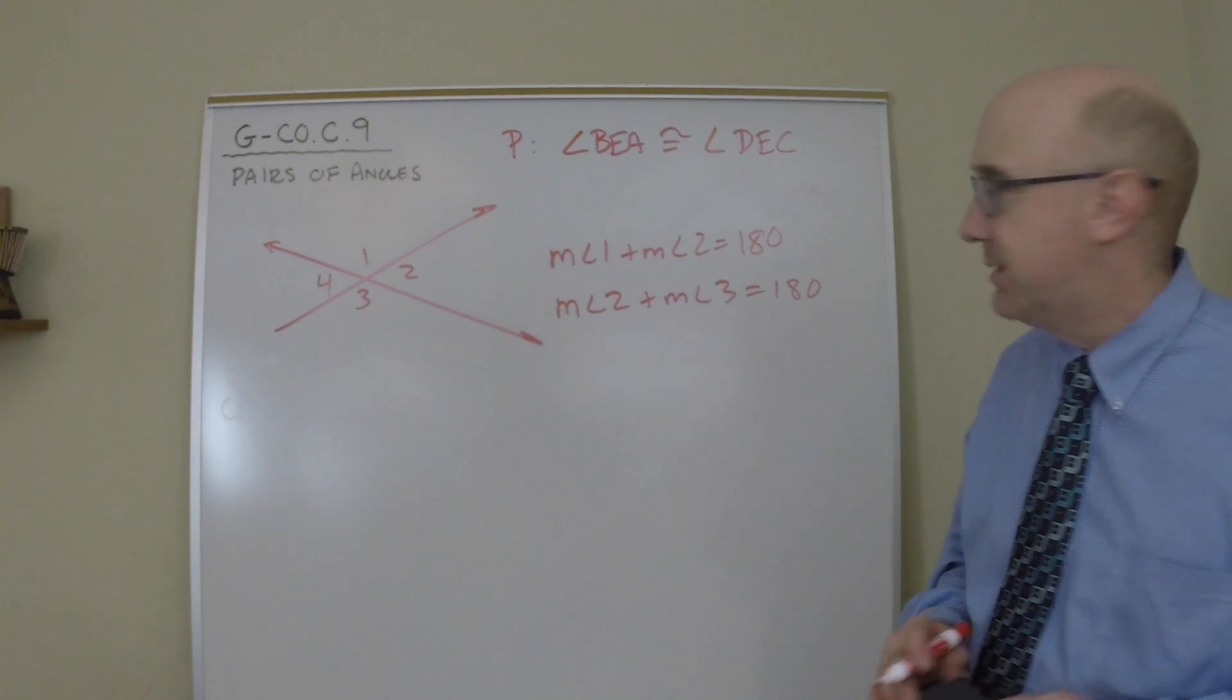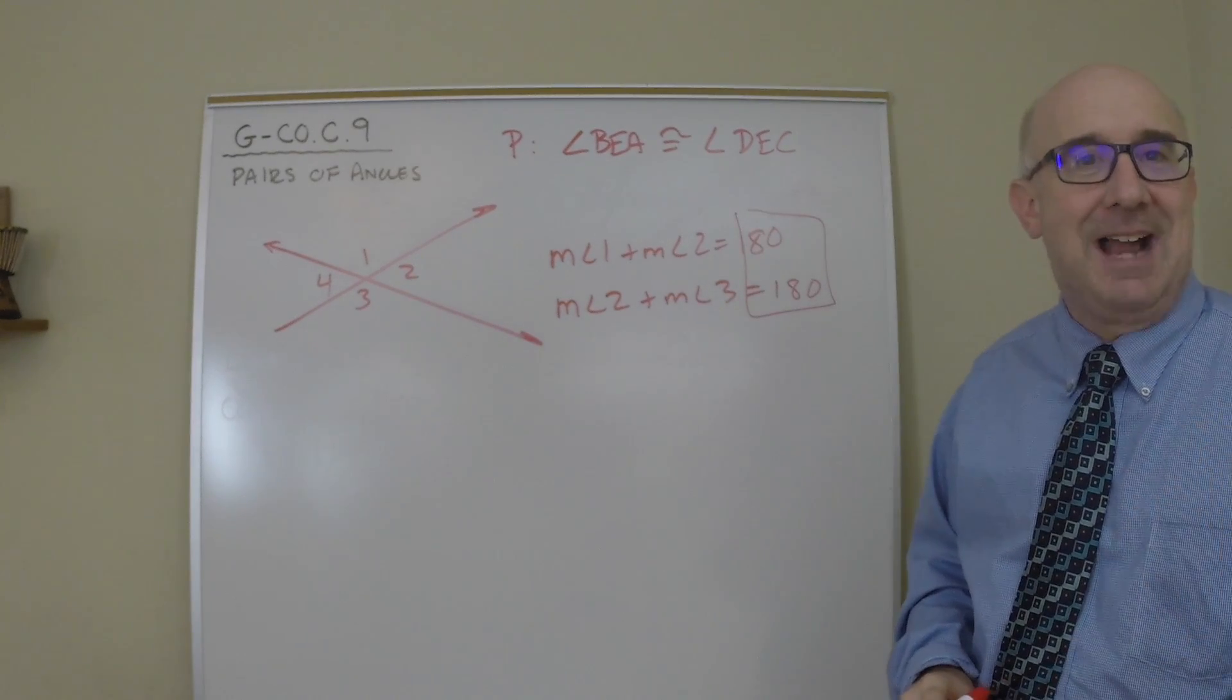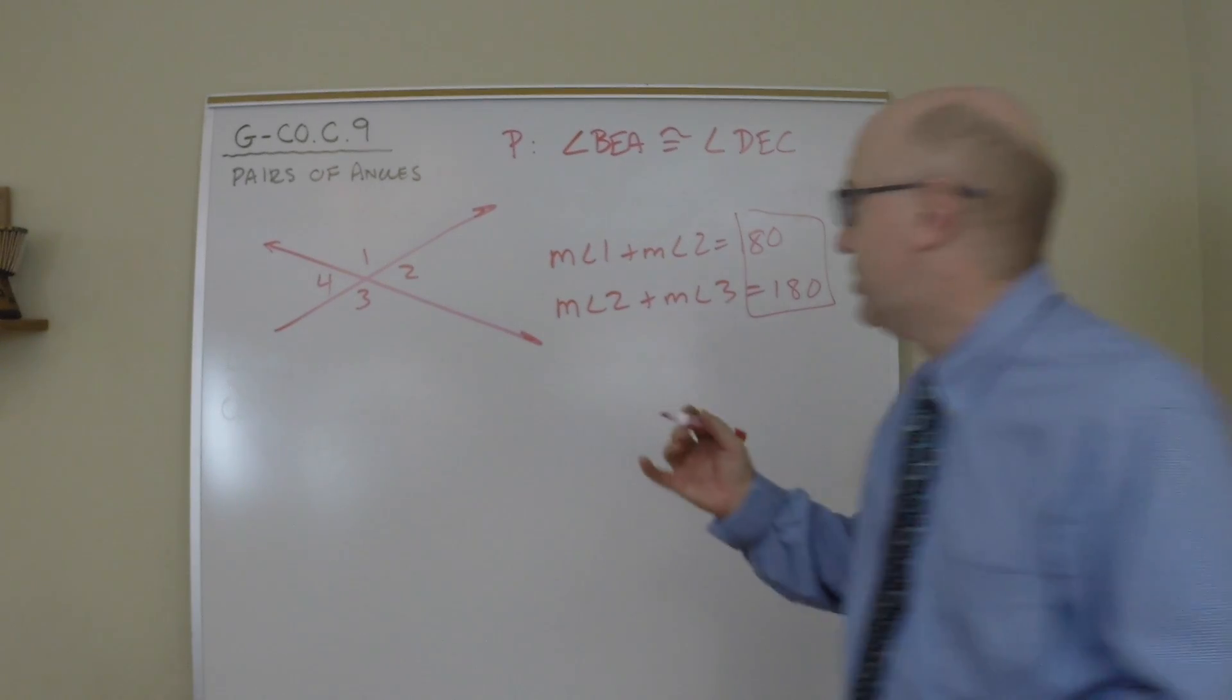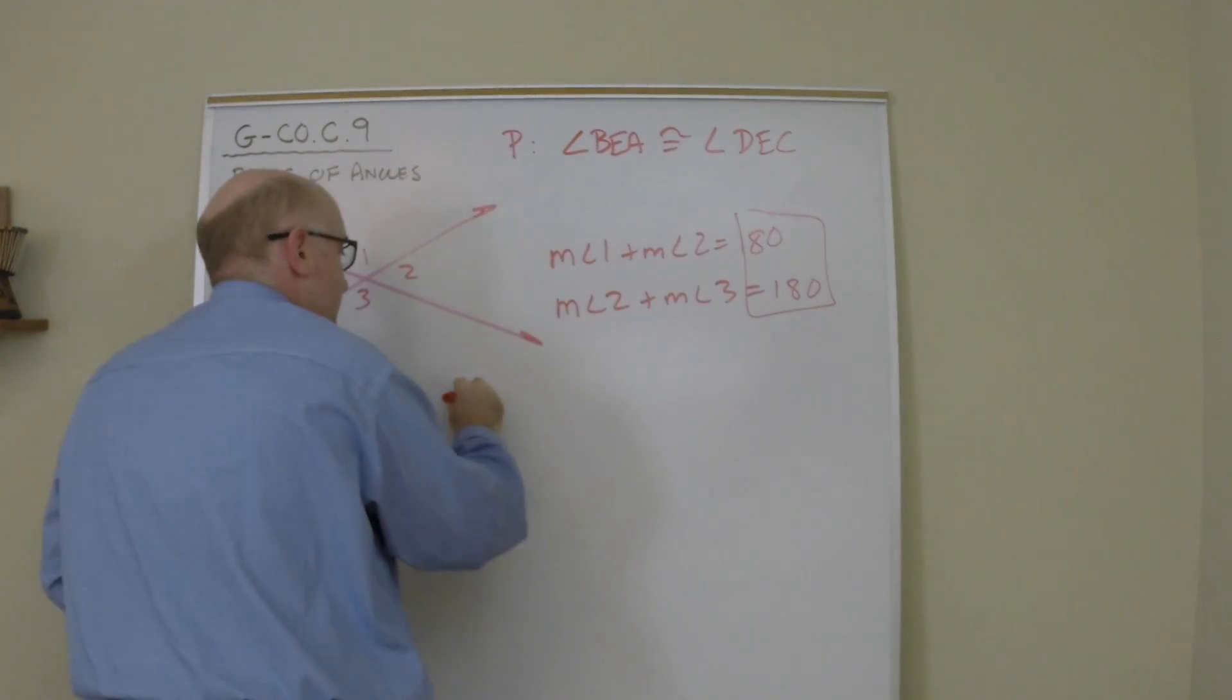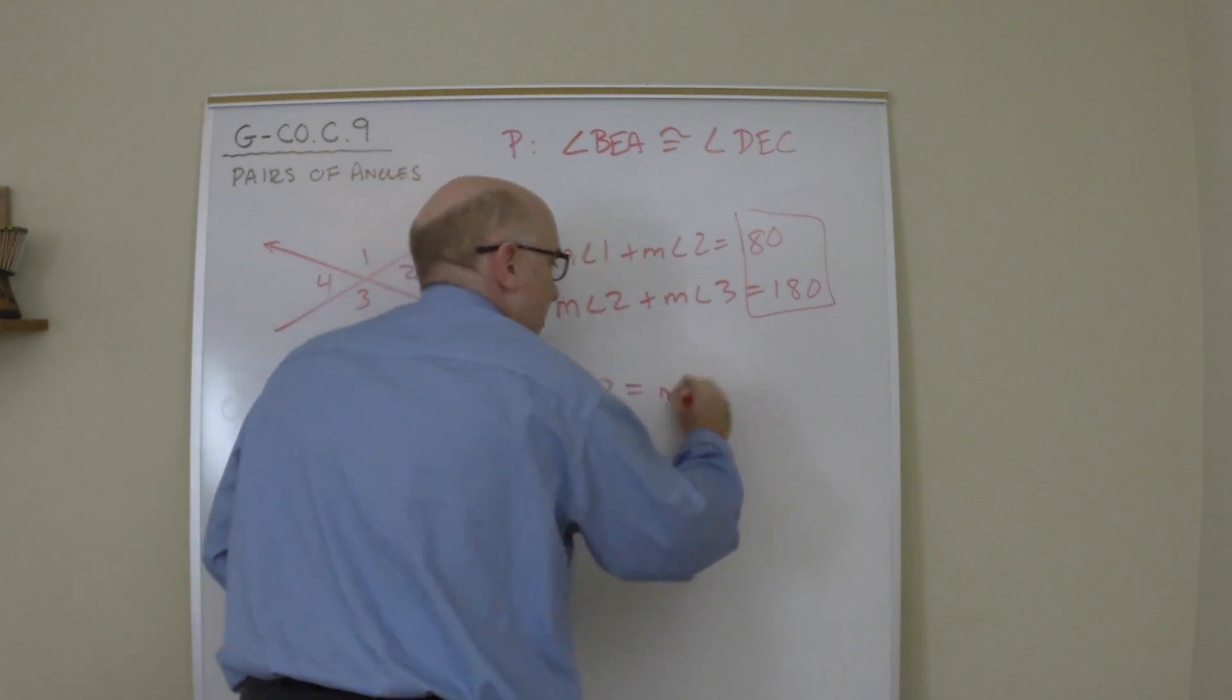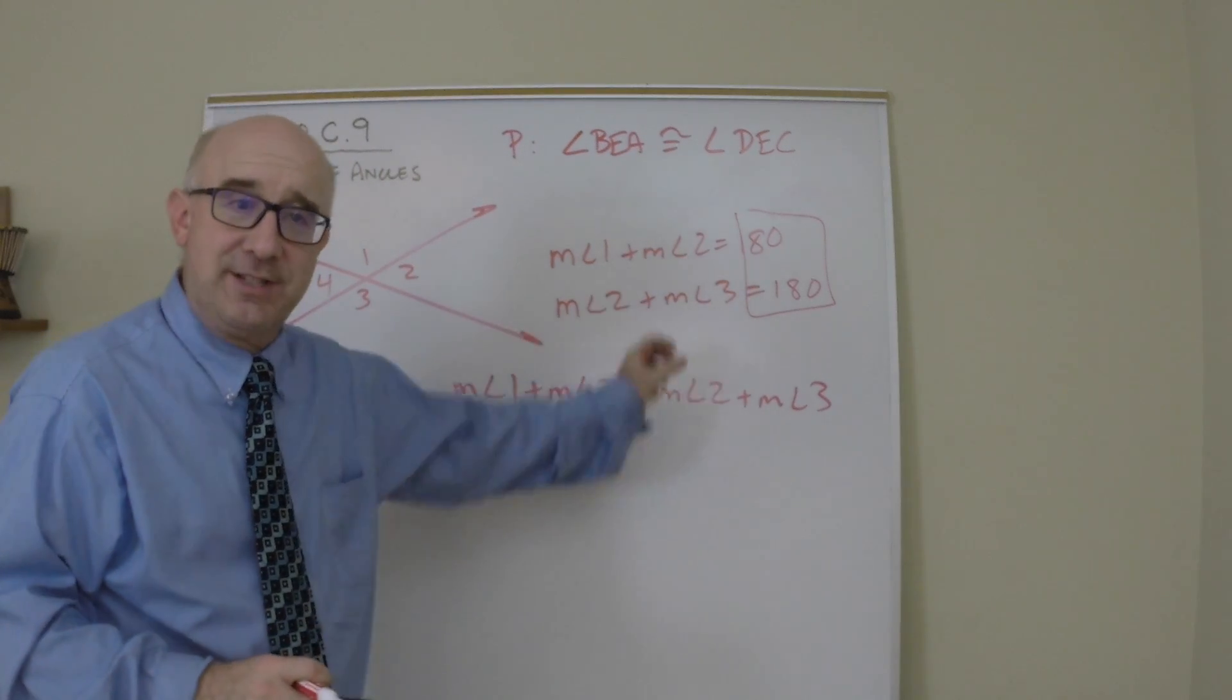These two equations happen to be exactly equal to the same thing. So using substitution, I can plug this into that spot. So I could say angle 1 and angle 2 equals angle 2 and angle 3. That's a substitution process.